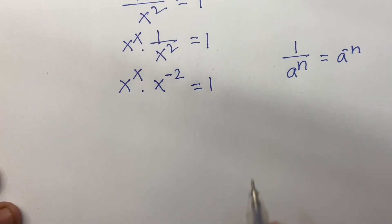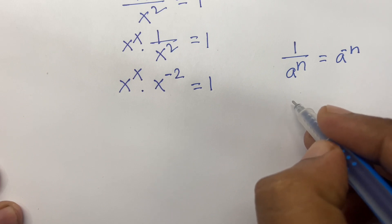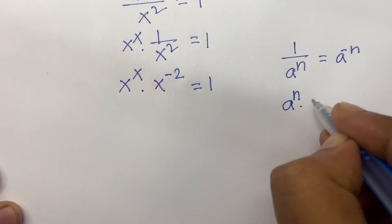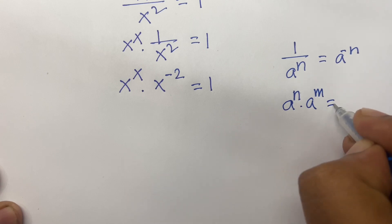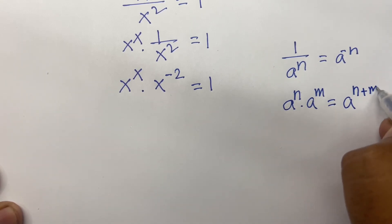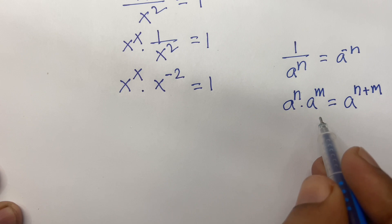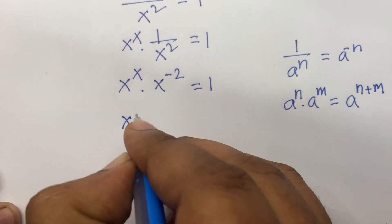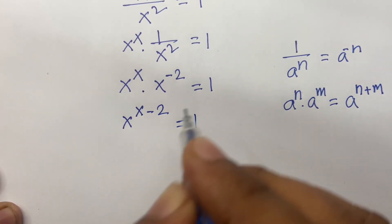We know that according to exponential rules, a to the power n times a to the power m equal to a to the power n plus m. If I follow these rules, I can say here is x to the power x minus 2 equal to 1.